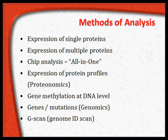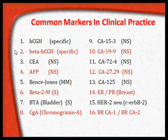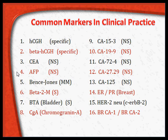Listed in this slide are common markers used in clinical practice. Human chorionic gonadotropin (HCG) is highly specific for choriocarcinoma; beta-HCG is specific for ovarian cancers and choriocarcinoma. Carcinoembryonic antigen (CEA), though a good test, is nonspecific and does not indicate which particular tumor it is. Alpha-fetoprotein (AFP) is particularly useful for liver cancer.